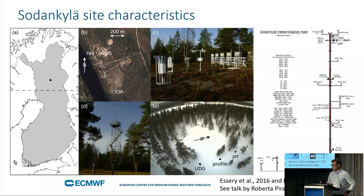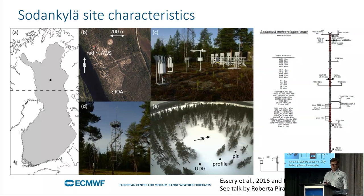The characteristics of the site: it's just inside the Arctic Circle in Finland. It's a forested site interspersed with clearings. At this time of year there's snow on the ground. There's a great suite of observations there, including a 50-meter mast with wind speed, temperature, and turbulent fluxes. Crucially, there are also observations of the snow and the soil as well, and lots of other things besides.